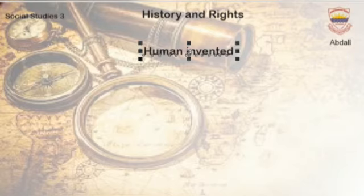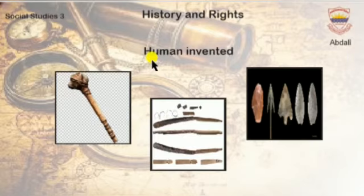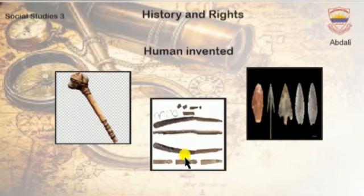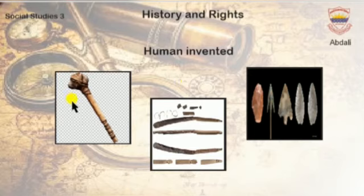Our next slide is Human Invented. What did humans invent? Humans invented a club, a bow, and an arrow.